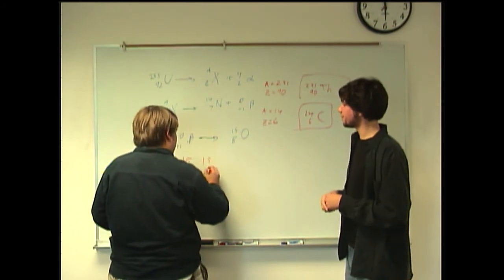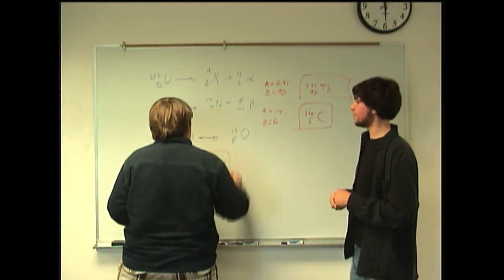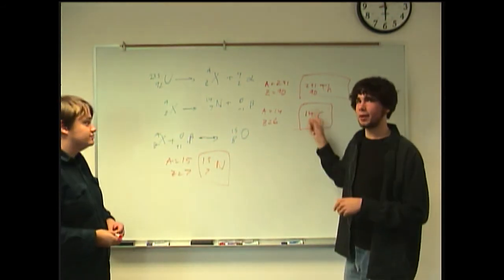Yeah. So, that gives us 15 and 7, which atomic number 7 would be nitrogen. That makes sense. I must have been thinking about that one still or whatever.